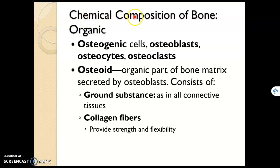The chemical composition of bone is divided between organic and inorganic. The organic composition of bone consists of the cells, which are the living things, and what the cells secrete. Therefore, the organic portion of bone includes the four different types of bone cells: osteogenic cells, osteoblasts, osteocytes, and osteoclasts.